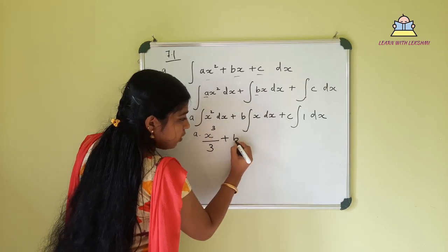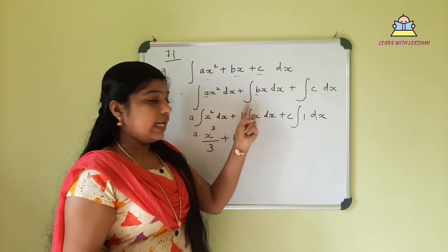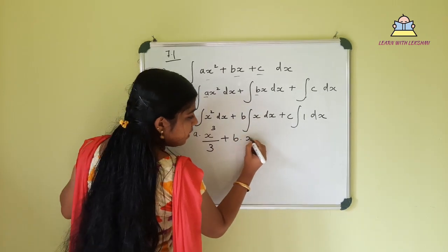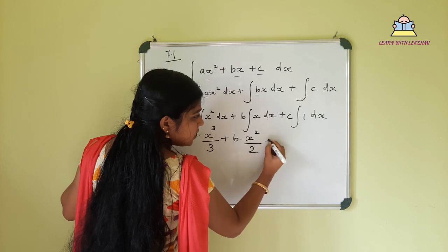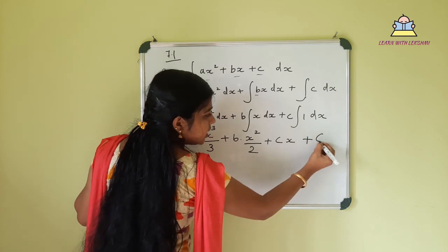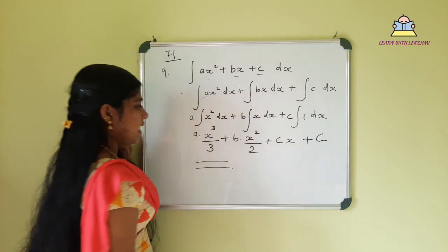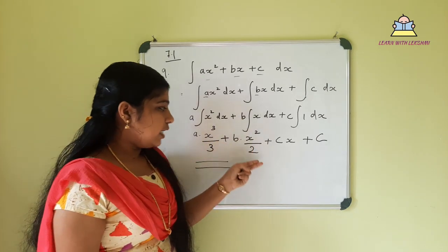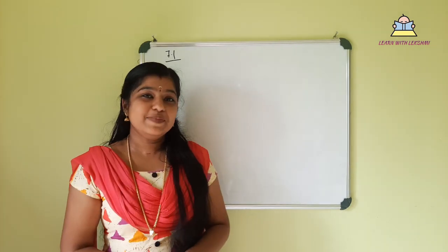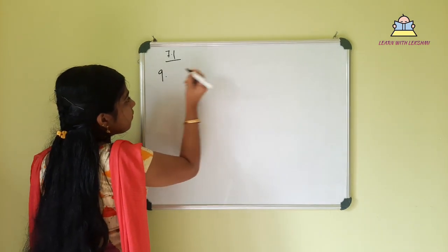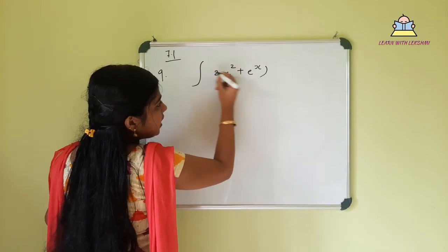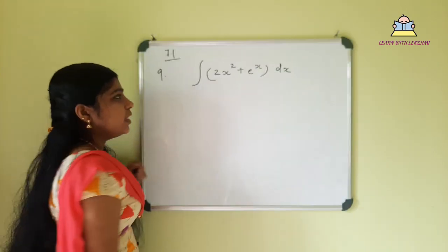Applying the power rule to each term: ax squared integrates to ax raised to 3 by 3, bx integrates to bx squared by 2, and the constant c integrates to cx. So the final answer is ax cubed by 3 plus bx squared by 2 plus cx plus c.